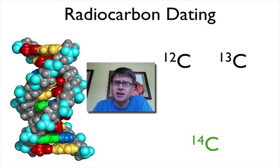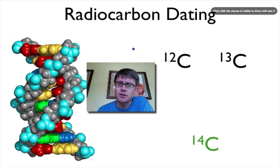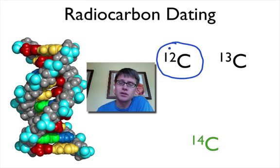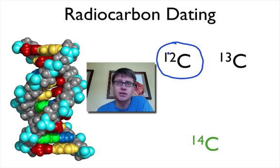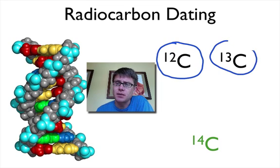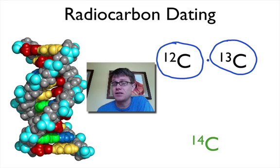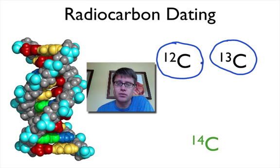Before we talk about that, we should probably talk about what carbon-14 is. There are three types of carbon on our planet. Good old run-of-the-mill carbon-12 has 6 protons and 6 neutrons, and that's going to be 99% of the carbon in the atmosphere. 1% of the carbon in the atmosphere is carbon-13, which has 6 protons and 7 neutrons. Both of these are stable — once they've been constructed they're not going to change forms.